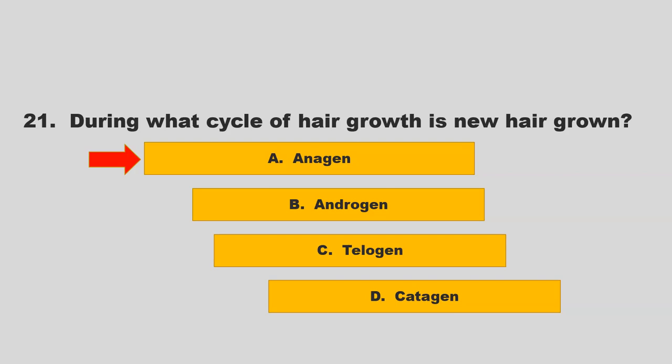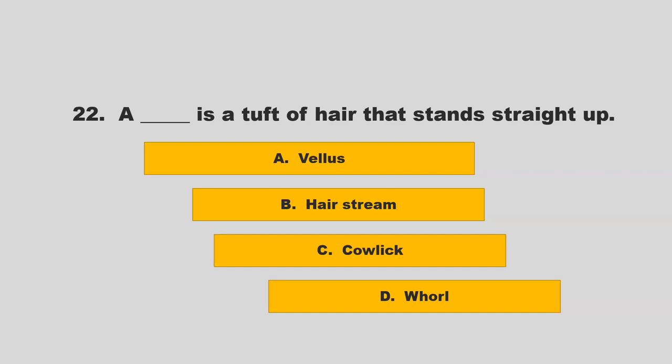A blank is a tuft of hair that stands straight up. Is it vellus, hair stream, cowlick, or whirl? If you chose C, cowlick, you are correct.